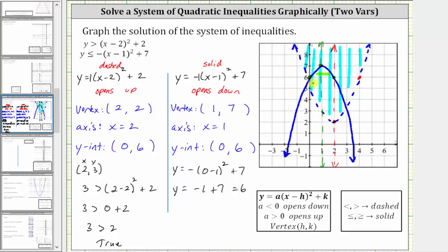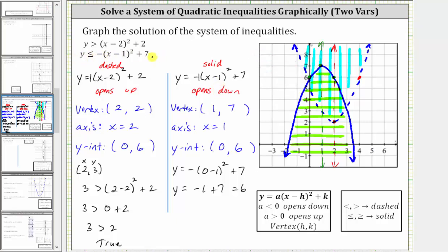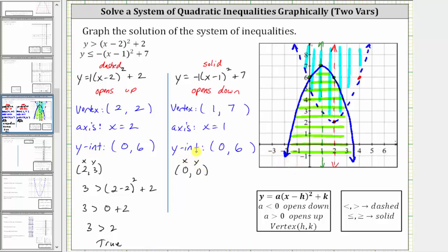Now we need to determine whether we shade inside the parabola or outside the parabola, or below or above the vertex. Going back to the original inequality, because we have y is less than or equal to, we are going to shade below the vertex or inside the parabola. Therefore this is the solution to the second quadratic inequality. Let's verify the solution to the second quadratic inequality by selecting a test point. We can select any point in the green shaded region. Let's select the point zero comma zero, which is the origin. We will substitute zero for x and zero for y and see if it satisfies the second inequality.